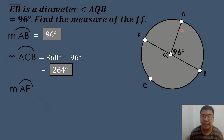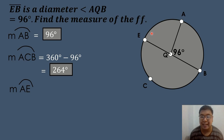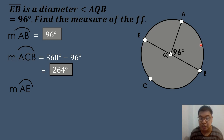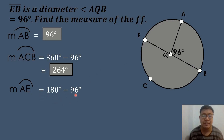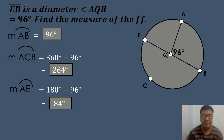Next, let's solve for arc AE. Since arc BAD is a semicircle cut by a diameter, it equals 180 degrees. We subtract the measure of arc AB (96 degrees) from 180 degrees: 180 minus 96 equals 84 degrees. So the measure of arc AE is equal to 84 degrees.